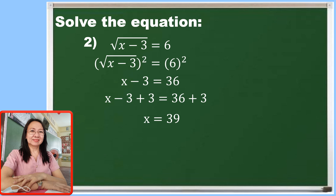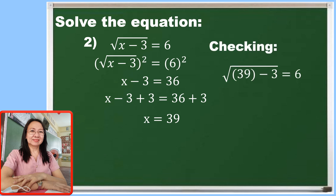Again, let us first do the checking. Substitute 39 in the given equation. So the square root of 39 minus 3 is equal to 6. And 39 minus 3 is 36. So we have the square root of 36 is 6. Therefore, 6 is equal to 6, and this is a true statement. So we have to accept the value of x which is equal to 39.